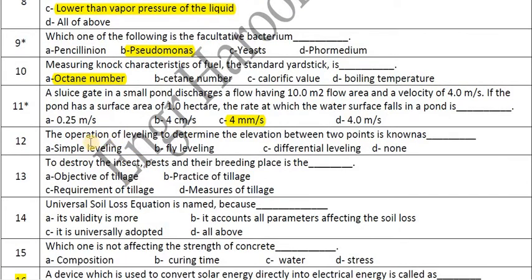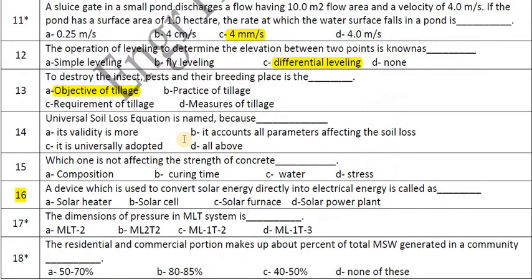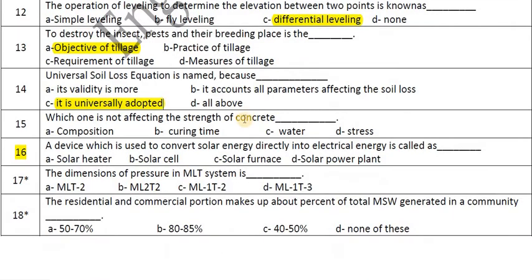The operation of leveling to determine the elevation between two points is known as differential leveling. To destroy insect pests and their breeding places is an objective of tillage. The universal soil loss equation is named because it is universally adopted.